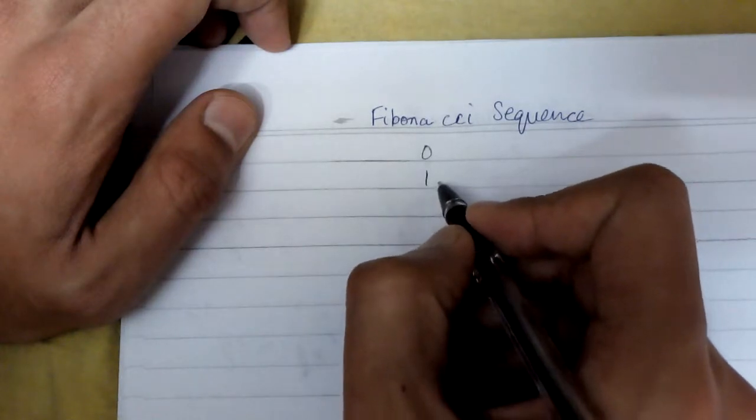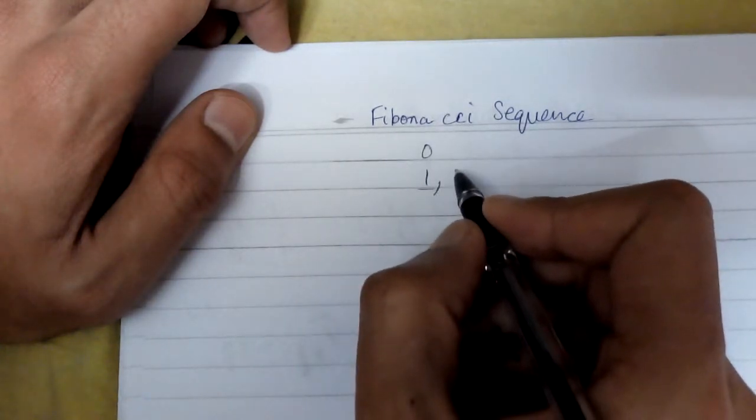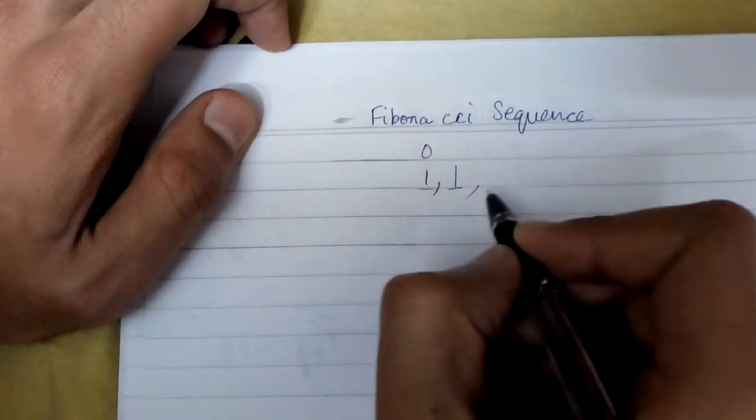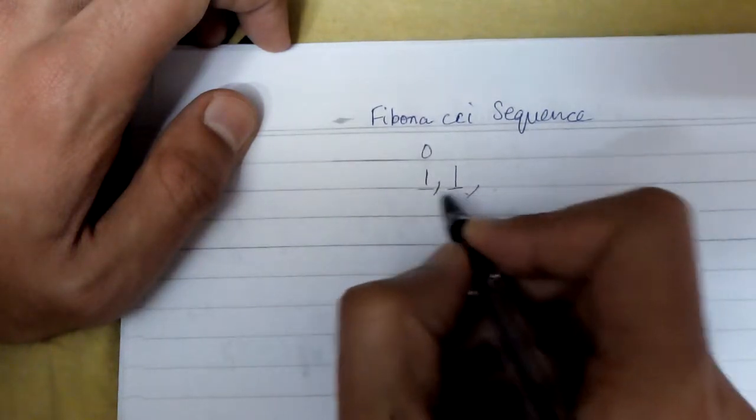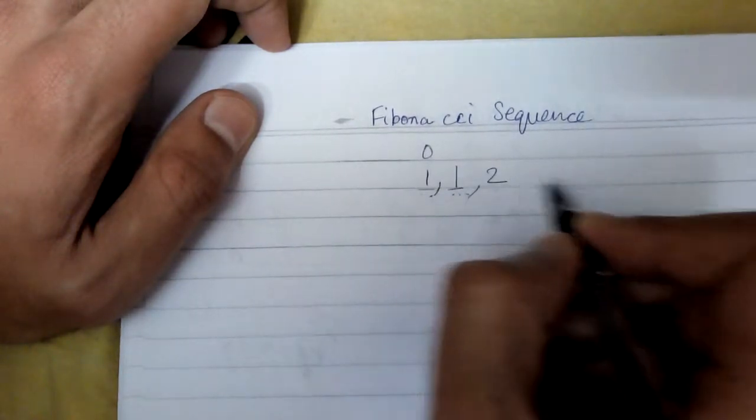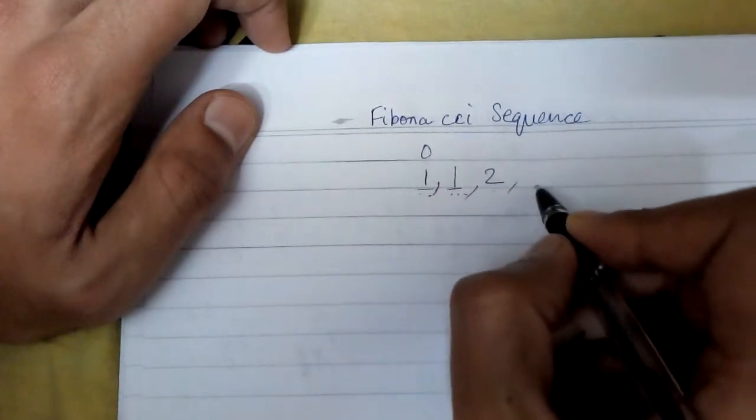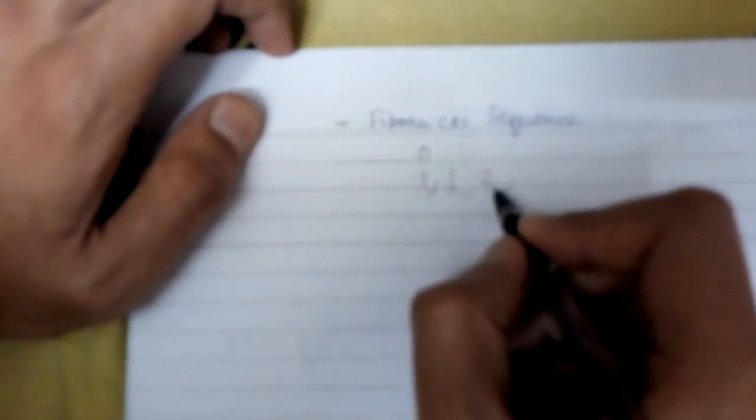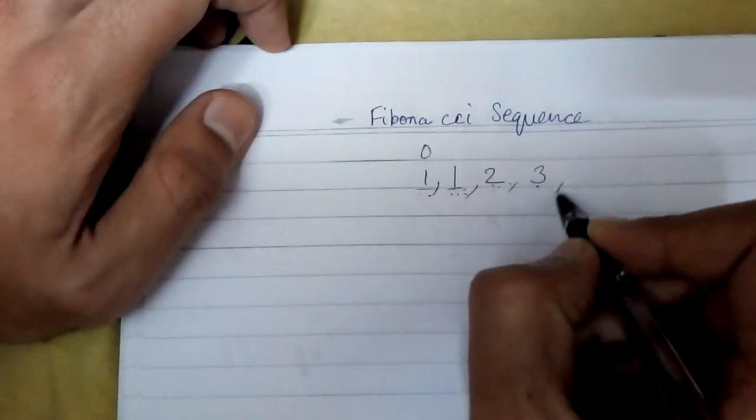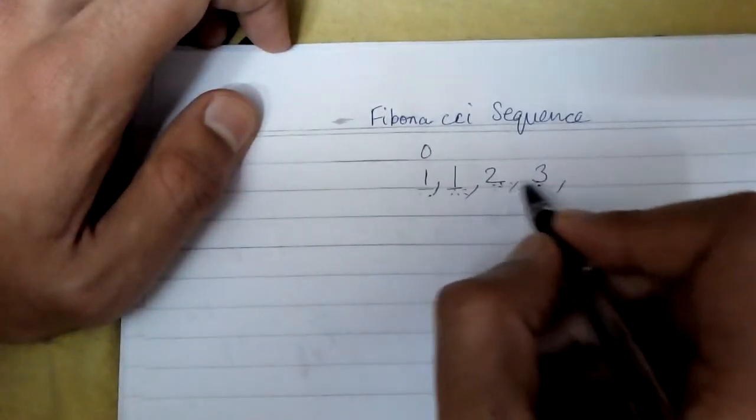So we will have our Fibonacci sequence started with 1, then again 1. Then the next element will be the sum of the previous two elements, so 1 plus 1 equals 2. Then again, the next element will be the sum of the previous two, that is 1 plus 2 which is 3. Again, the next element is sum of previous two.